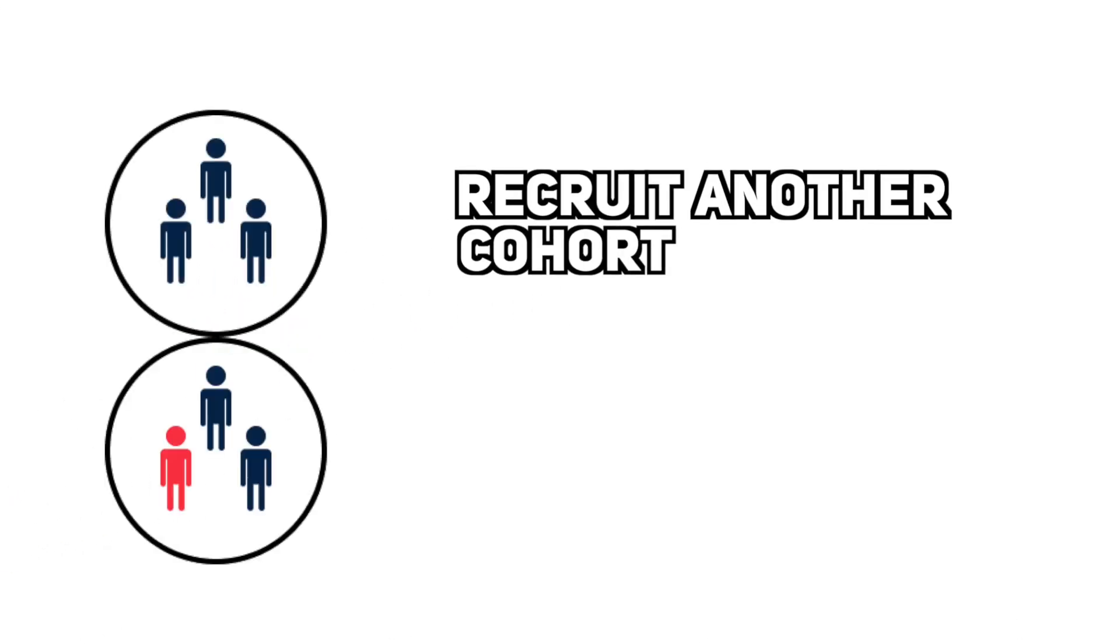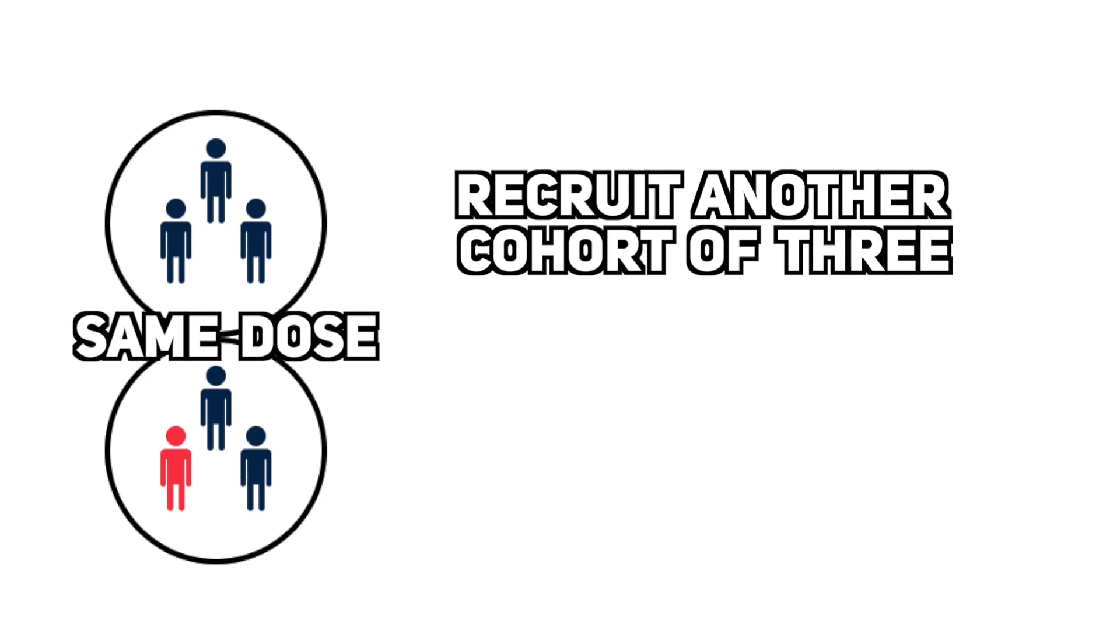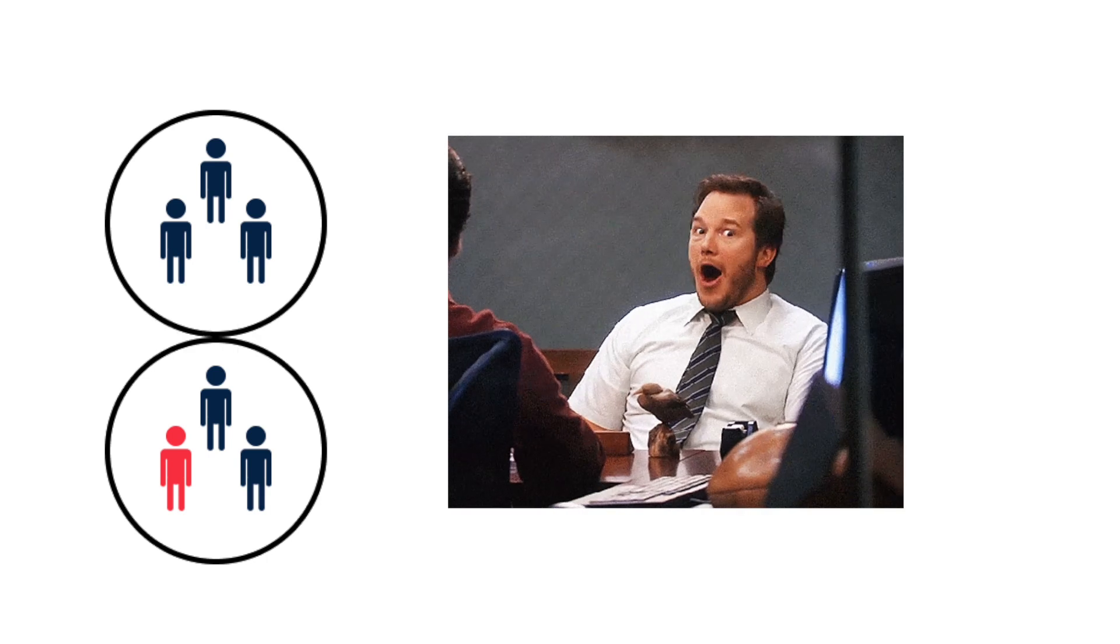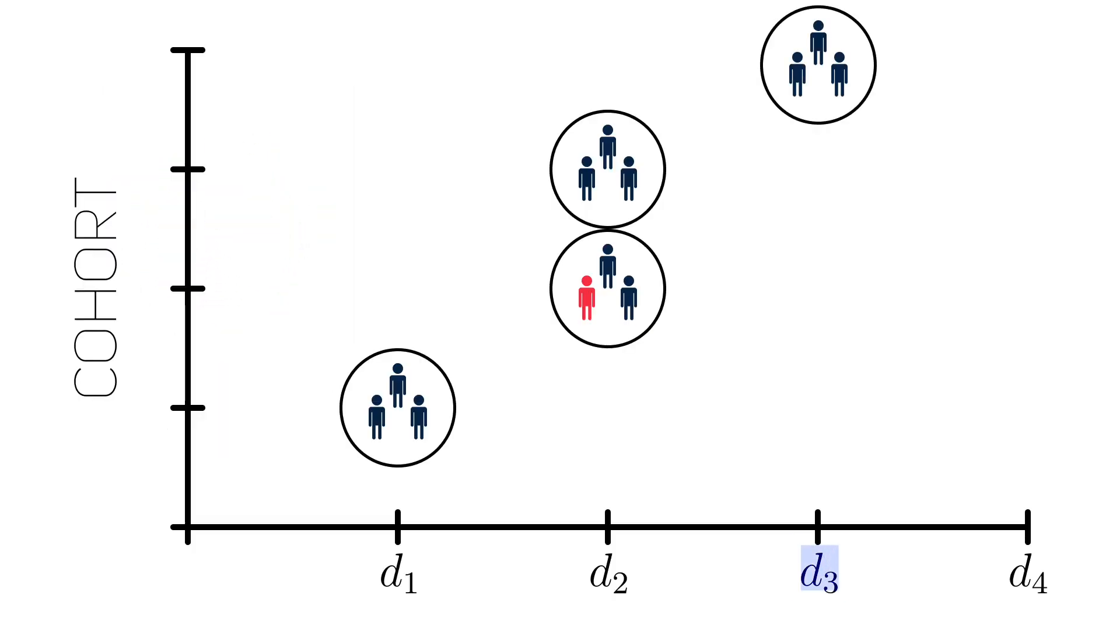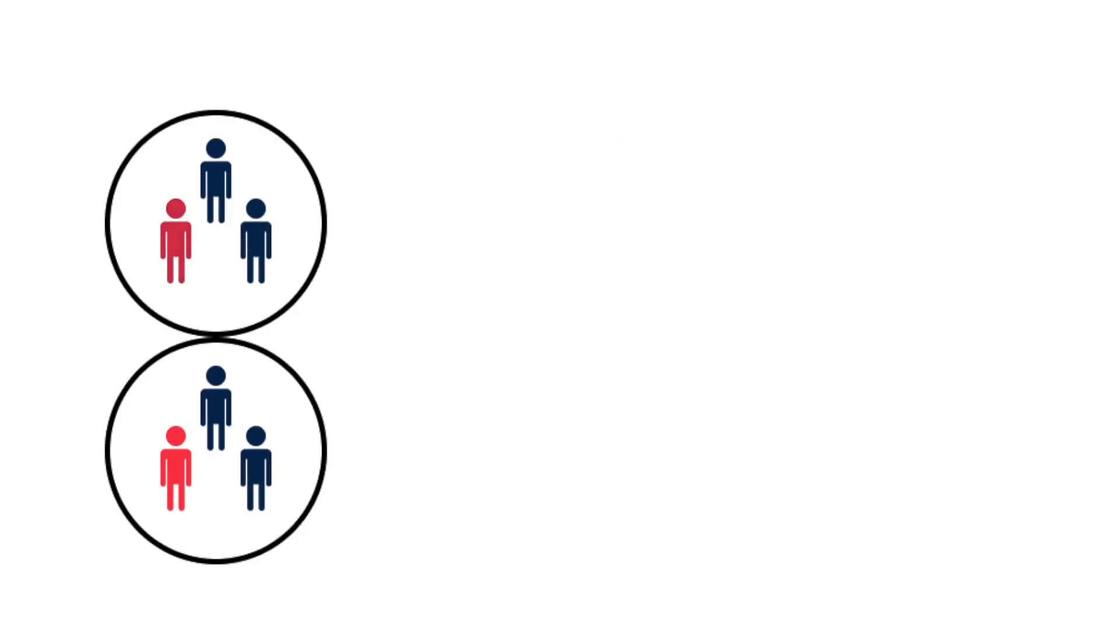If just one person gets a toxicity, then we actually recruit another cohort of 3 to take the same dose as the last one. This is why the trial gets its 3 plus 3 name. You can think of this as a last chance cohort. If nobody in the second cohort gets a toxicity, then the trial progresses to the next dose. If even one person in the second cohort gets a toxicity, then that dose is declared the MTD.